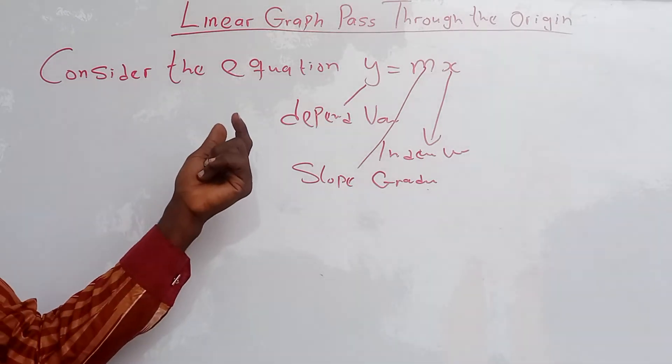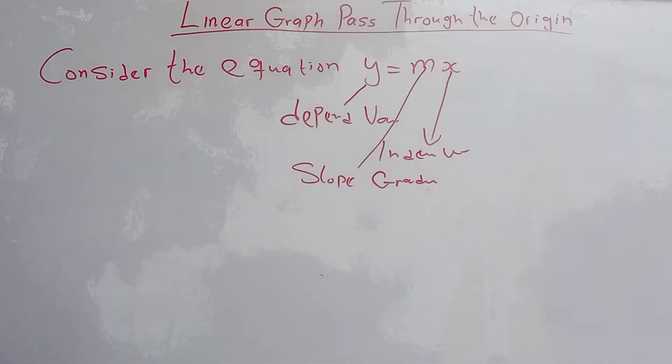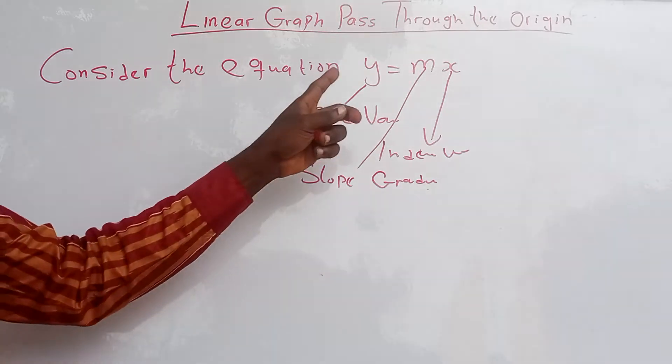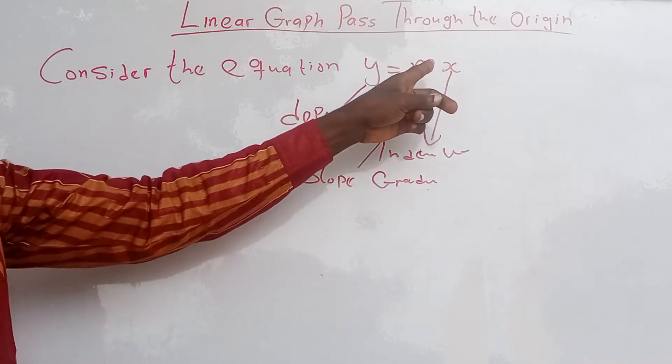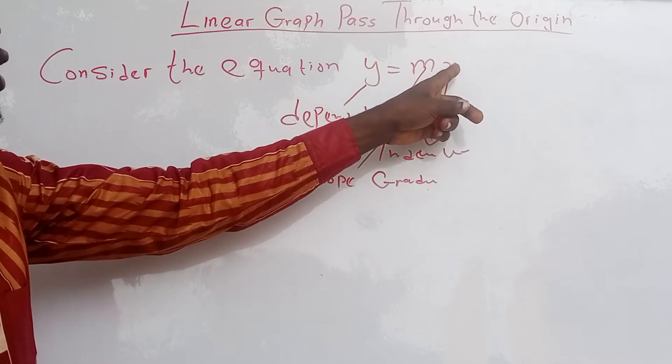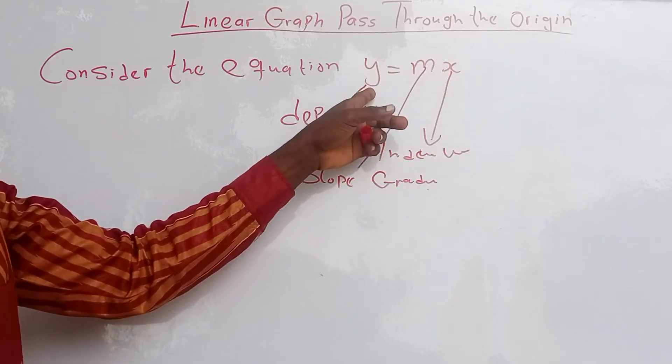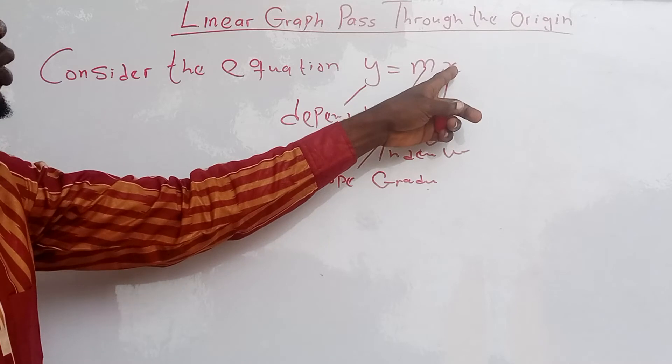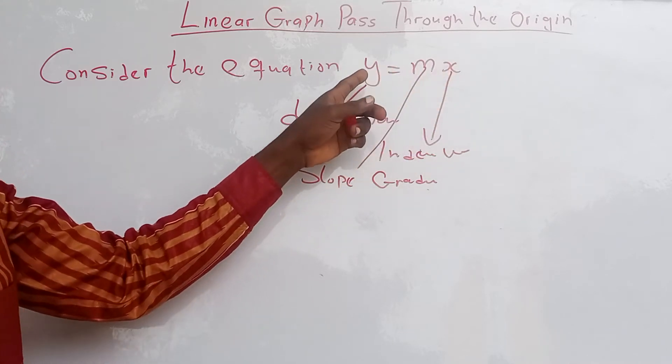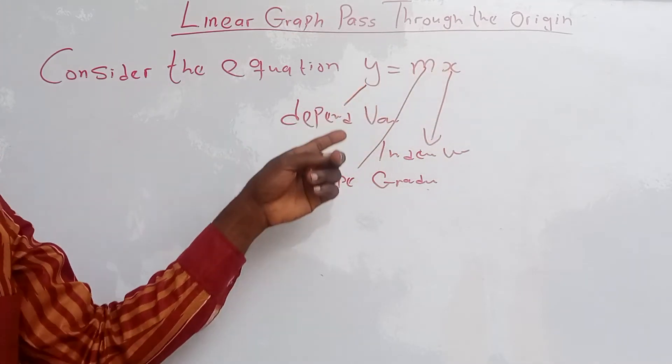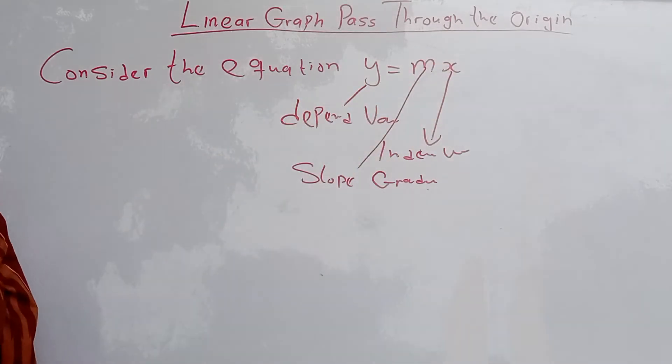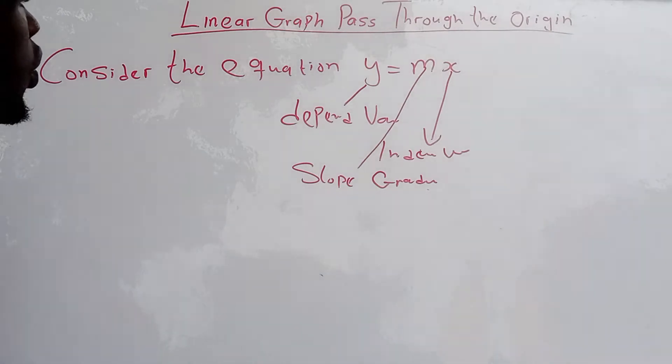To identify equations that pass through the origin: when x equals 2, y should equal 2; when x equals 3, y should equal 3; when x equals 4, y should equal 4. This type of equation always passes through the origin.